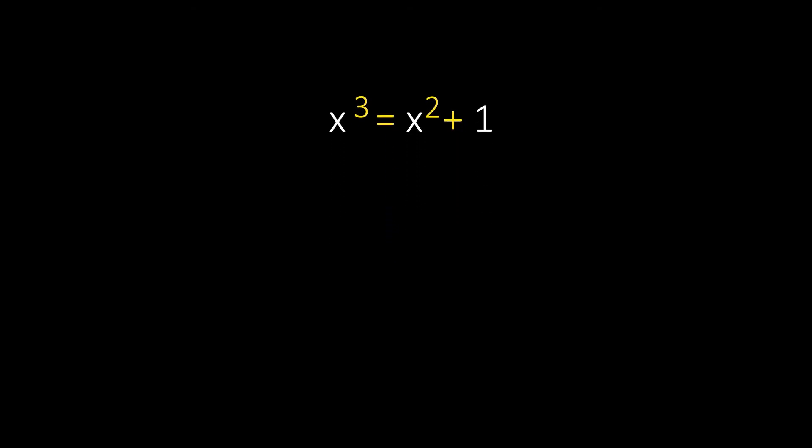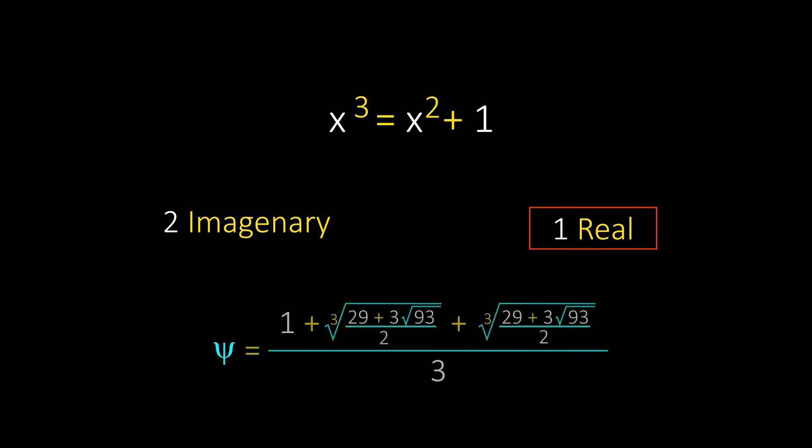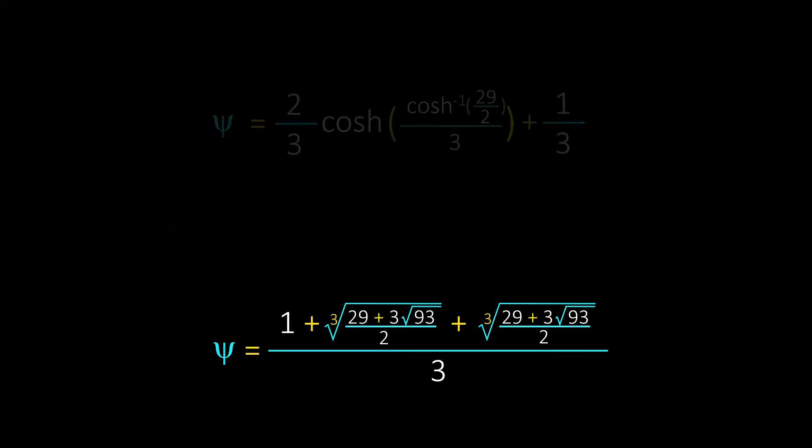This cubic equation has 3 roots, 2 imaginary and 1 real. And the real root is known as super golden ratio, whose value is this. It can also be represented using the hyperbolic cosine.